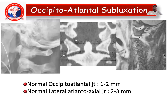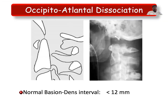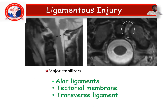In occipito-atlantal subluxation, the normal occipito-atlantal joint measures approximately 1 to 2 mm, and the normal lateral atlanto-occipital joint is 2 to 3 mm. The normal basion-dens interval is less than 12 mm. Major stabilizing ligaments include the alar ligament, the tectorial membrane, and the transverse ligament.